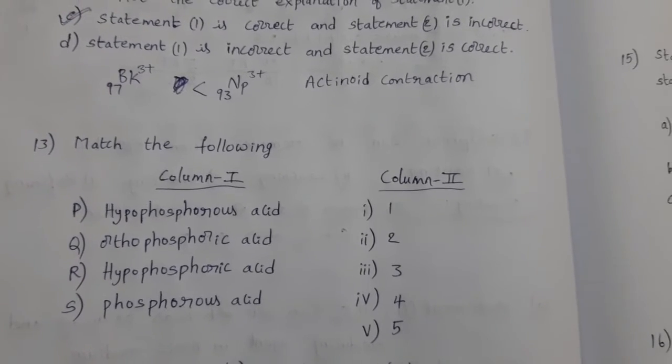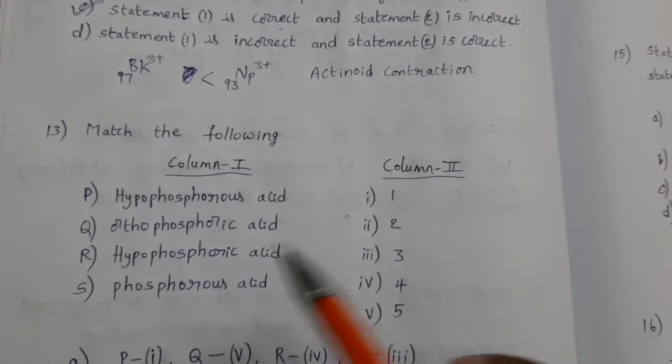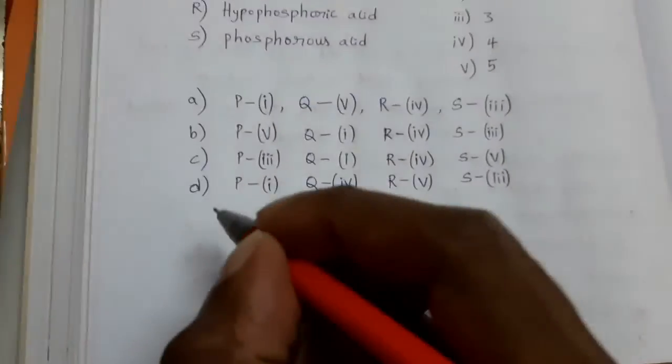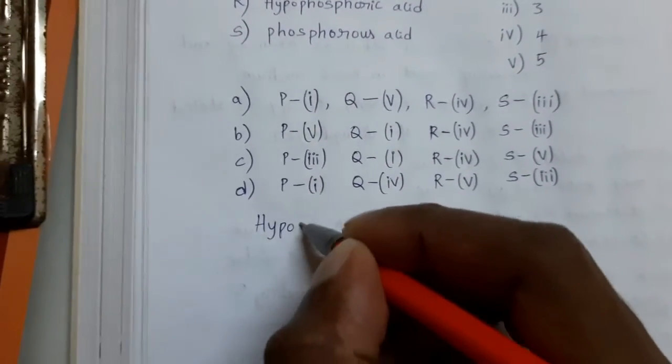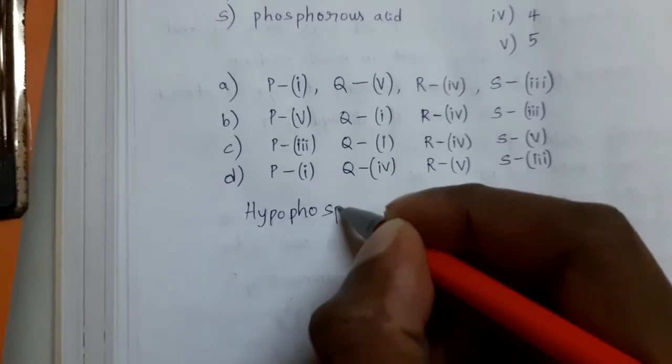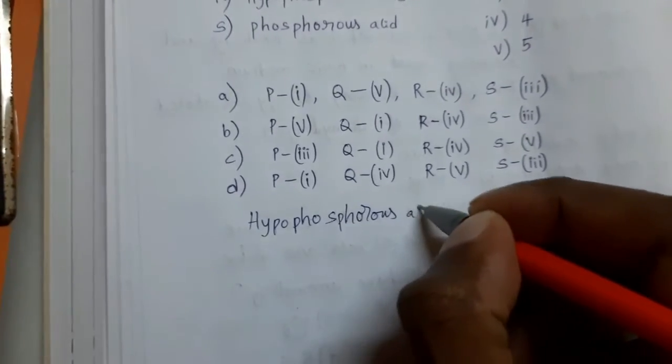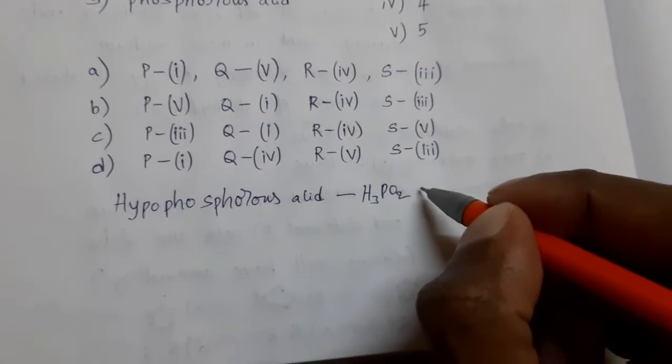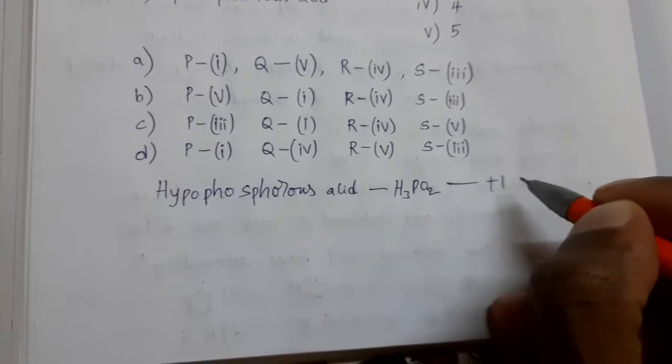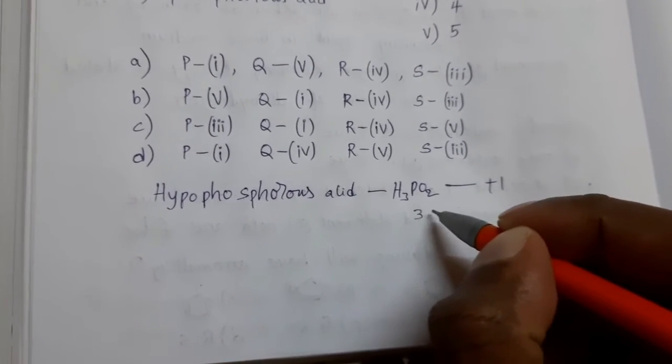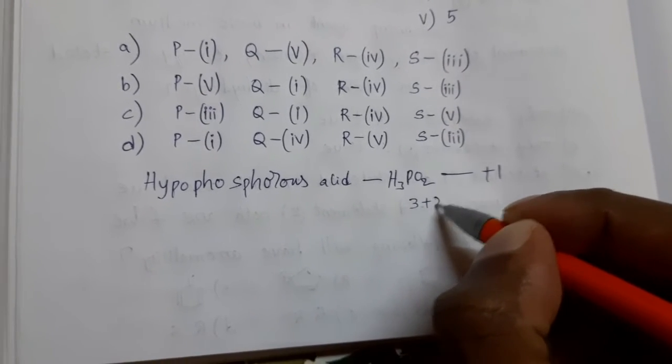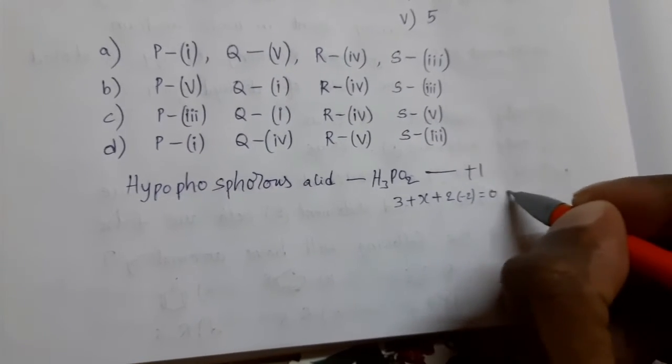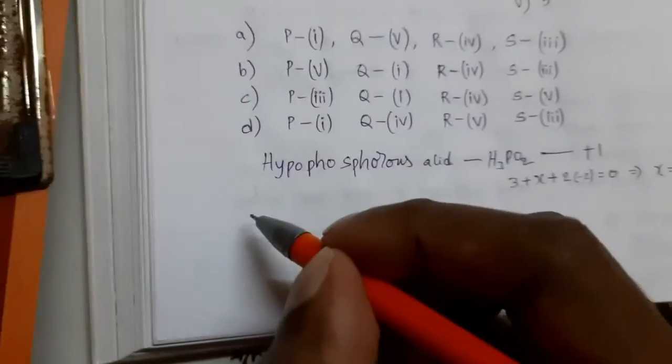Match the following. Hypophosphorous acid. Acids are given, oxidation states we have to match them. Hypophosphorous acid, what is the formula? H3PO2. In this, phosphorous oxidation state is plus 1. For example, hydrogen plus 1, 3 hydrogens 3 plus, phosphorous we want, let it be X, plus 2 into for 1 oxygen minus 2. Then X equal to plus 1. Next, orthophosphoric acid. Phosphorous oxidation state plus 5.